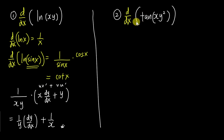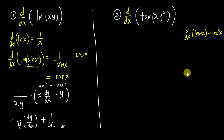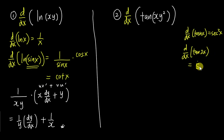For Question 2, if you want to differentiate tan(xy²), you must first understand what you get when you differentiate tan x — it gives you sec² x. So if you differentiate tan(2x), you get sec²(2x), and then differentiate 2x to get 2, giving you 2·sec²(2x).